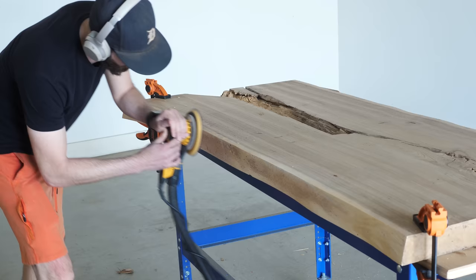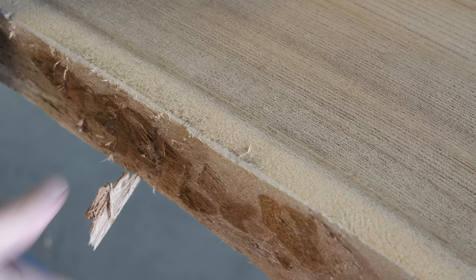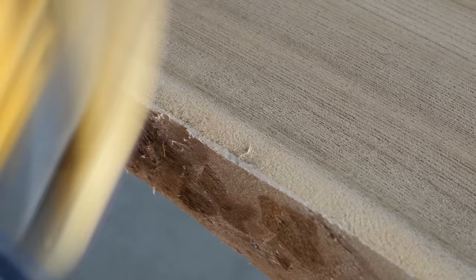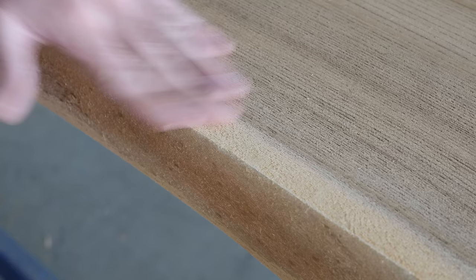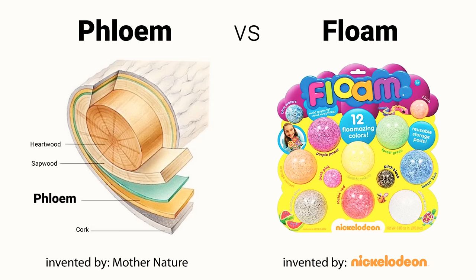So here we're just following the natural shape of the edges and removing any knots and the softer wood that's just below the bark, which I think is called phloem. And if you're wondering if I had to just look that up, the answer is yes. Up until 30 seconds ago I thought phloem was just a kind of slime alternative that Nickelodeon made in the 90s.